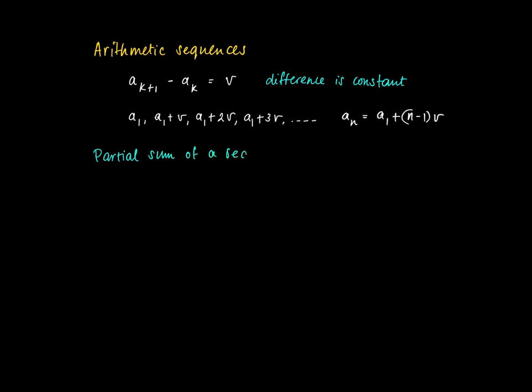The partial sum of a sequence is just the sum of the first n terms. And the sum of the first n terms is usually written down by S_n. So S_n means the sum of the first n terms.